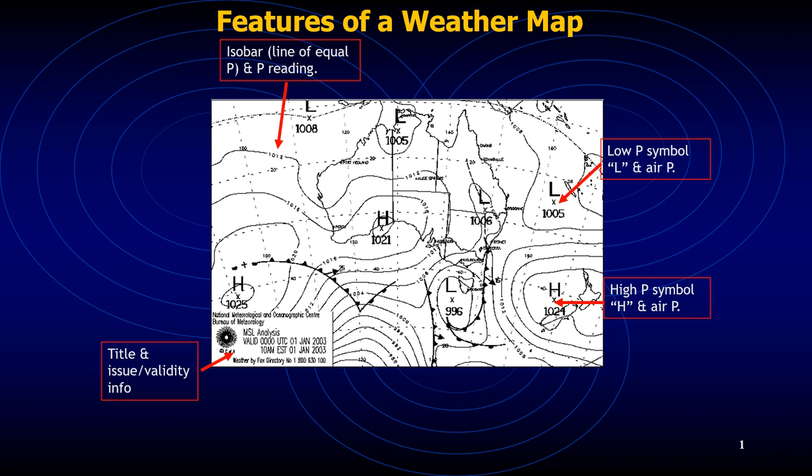Then we have the isobars. Isobars are lines that join areas of equal atmospheric pressure, and the pressure reading is included within these lines. As you can see where the arrow is pointing, it reads 1012, with 1016 below it and 1008 above it — so these lines are separated by four millibars of pressure, joining areas of equal atmospheric pressure.